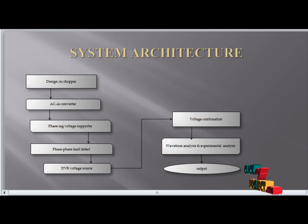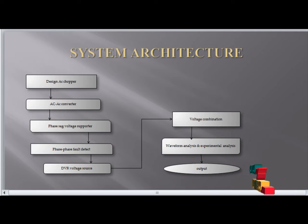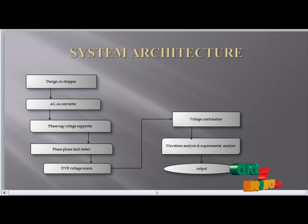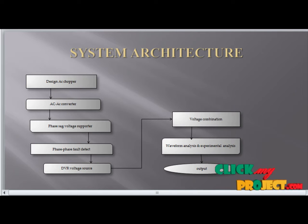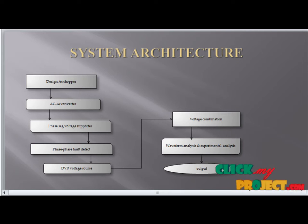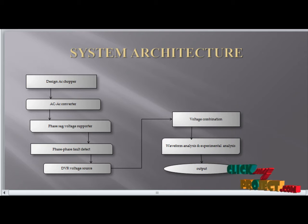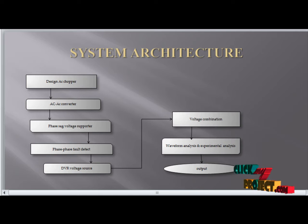System architecture: first, you can design the AC chopper. The AC chopper internally connects the AC to AC converter for three-phase voltage sag support. Phase jump detection is used to identify phase-to-phase faults. We have used the dynamic voltage restorer as the main part of the circuit. You can detect the AC to AC voltage combination, perform waveform analysis and experimental analysis, and finally obtain the three-phase fault voltage output, three-phase voltage transformer output, and calculate voltage and current output.